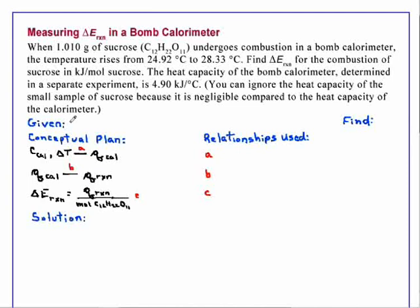Find delta E of reaction for the combustion of sucrose in kilojoules per mole of sucrose. The heat capacity of the bomb calorimeter, determined in a separate experiment, is 4.90 kilojoules per degree C.